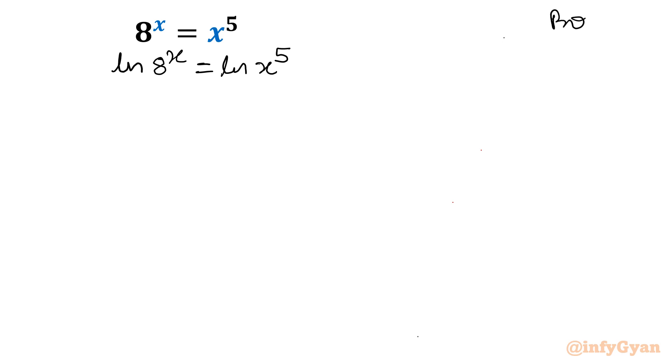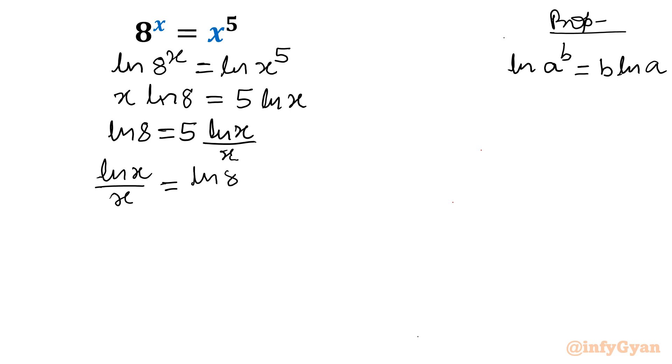Let me write property of logarithmic. Property number 1 I am going to use. ln a power b can be written as b ln a. So both sides we can write exponents as multiplier. x ln 8 would be equal to 5 ln x. Divide both sides by x. So ln 8 would be equal to 5 ln x over x. Now divide both sides by 5 also. So finally equation will come into the form of ln x over x equal to ln 8 over 5.